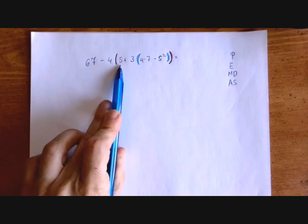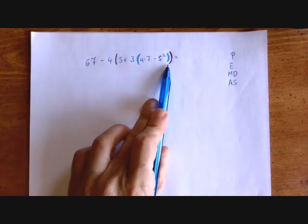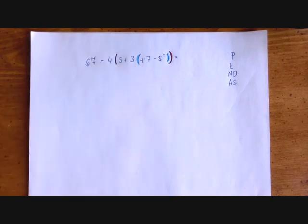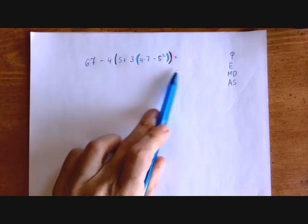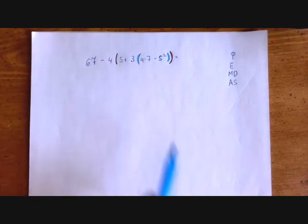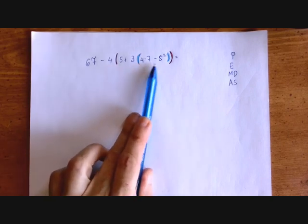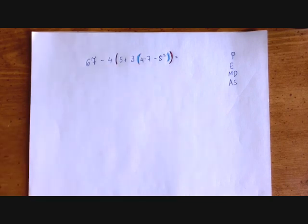And now inside the parenthesis, we do the same thing. We zoom in and we run into this blue parenthesis. So we have to work there until this becomes just a number. So inside the parenthesis, we have a multiplication, a subtraction, and an exponentiation. Exponentiation beats the other two.